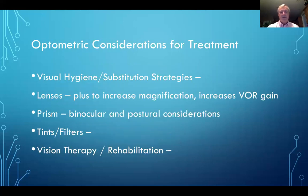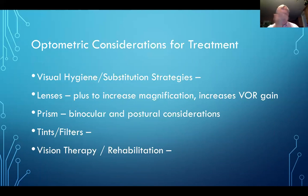Optometric considerations for treatment: we ask the patient to work on visual hygiene and substitution strategies. One primary strategy is blinking — many of these patients are like a deer in headlights, just staring, and any motion in front of them will continue to build up symptoms. A blink stops the motion and resets with fixation to dampen the signal. Other treatments include lenses — plus increases magnification and VOR gain — prism for binocular and postural considerations, tints and filters, and vision therapy or rehabilitation.